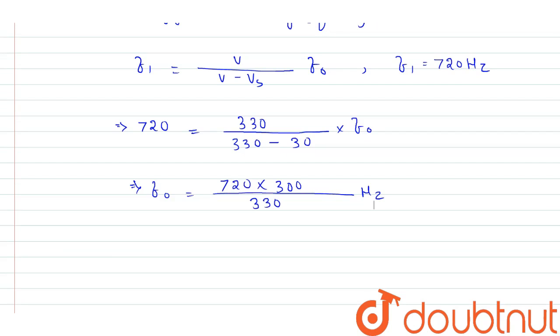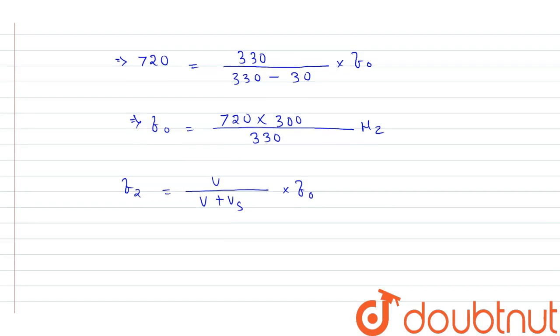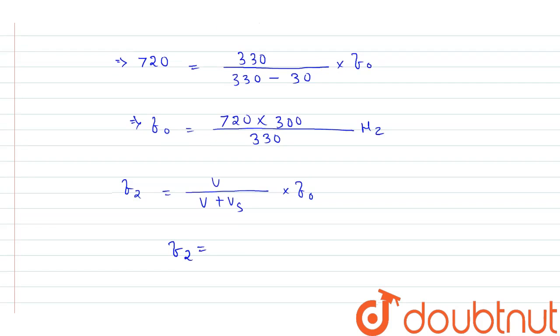Now when the source is moving away from the observer, the apparent frequency of sound is given by the relation F2 equals f0. In the equation, the value of F2 is given as F2 equals x into 10 power 2 hertz.